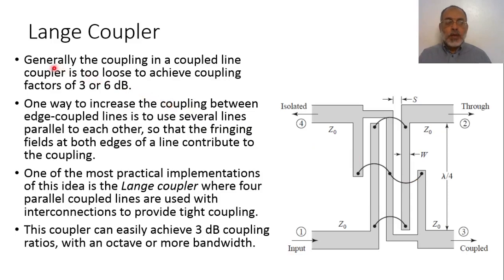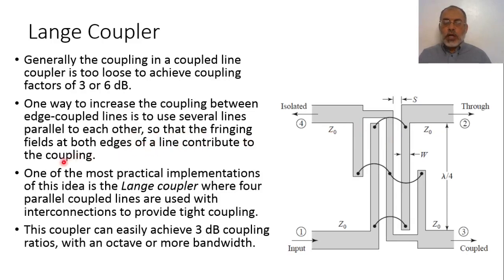Generally, the coupling in a coupled line coupler is too loose or very small to achieve a coupling factor up to 3 or 6 dB. One way to increase the coupling between the edge coupled lines is to use several lines parallel to each other, so that the fringing fields at both edges, from both directions, contribute to the coupling. One of the most practical implementations of this idea is the Lange coupler, where four parallel coupled lines are used with interconnections to provide tight coupling.